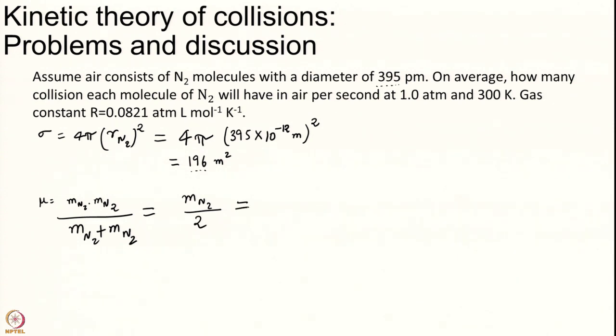The next quantity I have to calculate is the average speed. But to calculate average speed first let me get the mass. This is equal to M of N2 divided by Avogadro and the mass of nitrogen is what? Nitrogen atomic mass is 14 gram per mole. So this is 28 grams per mole divided by Avogadro divided by 2.